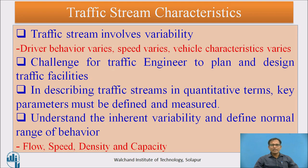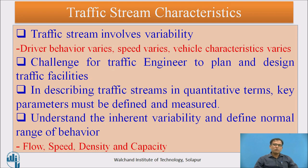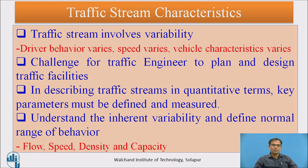To understand the inherent variability and define the normal range of behavior: for example, taking speed — some drivers go at very high speed, some at very low speed. We need to define traffic stream parameters for the normal range of behavior, meaning all vehicles are assumed to be traveling at the average speed in the traffic stream. For that average speed, we define all traffic stream parameters and design the facilities.